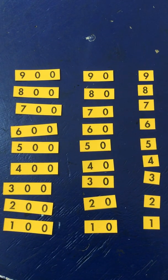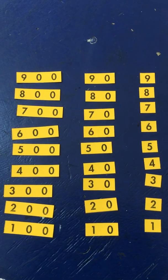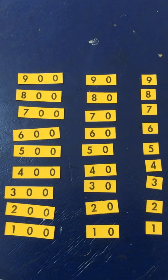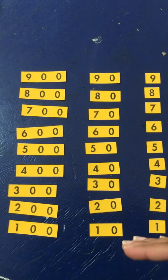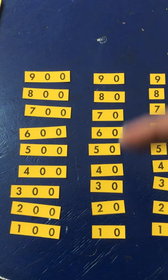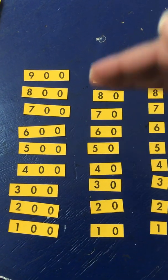Then you mix your cards up and you start all over again. Keep practicing from one at the bottom to nine at the top, 10 at the bottom to 90 at the top, 100 at the bottom to 900 at the top.